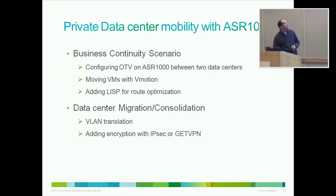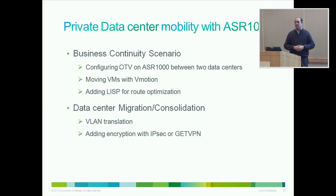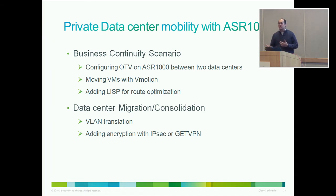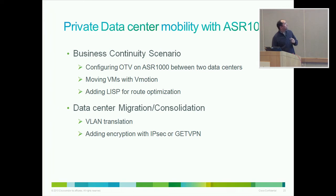Another scenario is data center migration. Sometimes customers build a new data center that runs on a different VLAN set. You may run VLAN 100 to 200, but when you merge with another company or build a disaster recovery data center, it may run a different VLAN set like VLAN 300 to 400. How would they work together if you want to move machines? We need some kind of translation, and we are very powerful with switching capabilities using the EVC framework on ASR 1000 — able to do a lot of VLAN translation and tag manipulation.